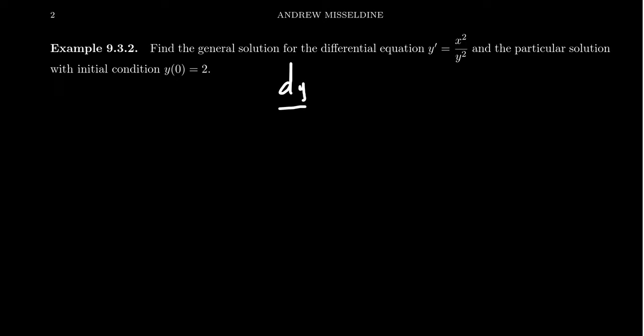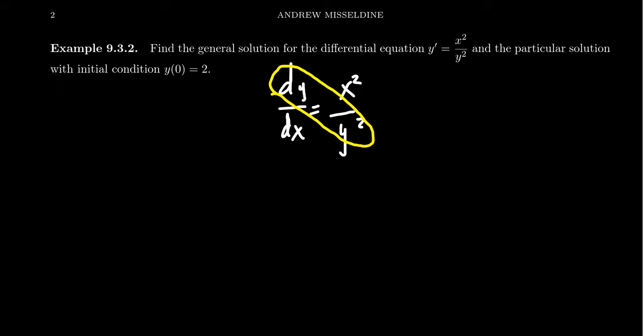Let's see some examples. Let's find the general solution for the differential equation y prime equals x squared over y squared, and we're going to find the particular solution when y of 0 equals 2. To begin with, we're going to separate the variables. I prefer to write y prime as dy over dx because this helps inform me as I separate variables. So as you cross multiply, taking the y's together and the x's together, you end up with y squared dy equals x squared dx.